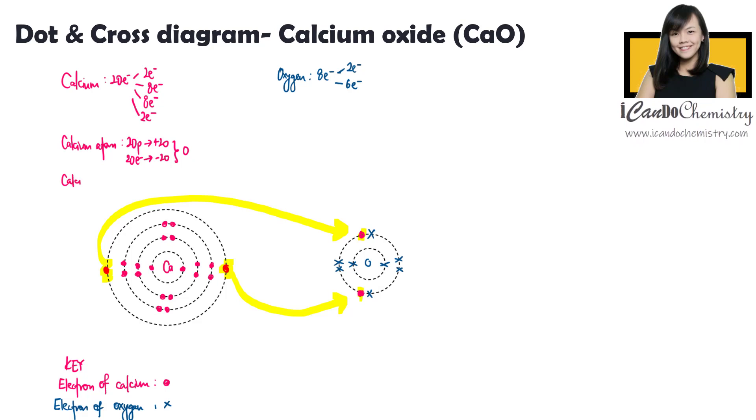When calcium gives away its electrons to the non-metal, the number of protons remain unchanged. Hence, the positive charge is still positive 20. However, there are only 18 electrons left.